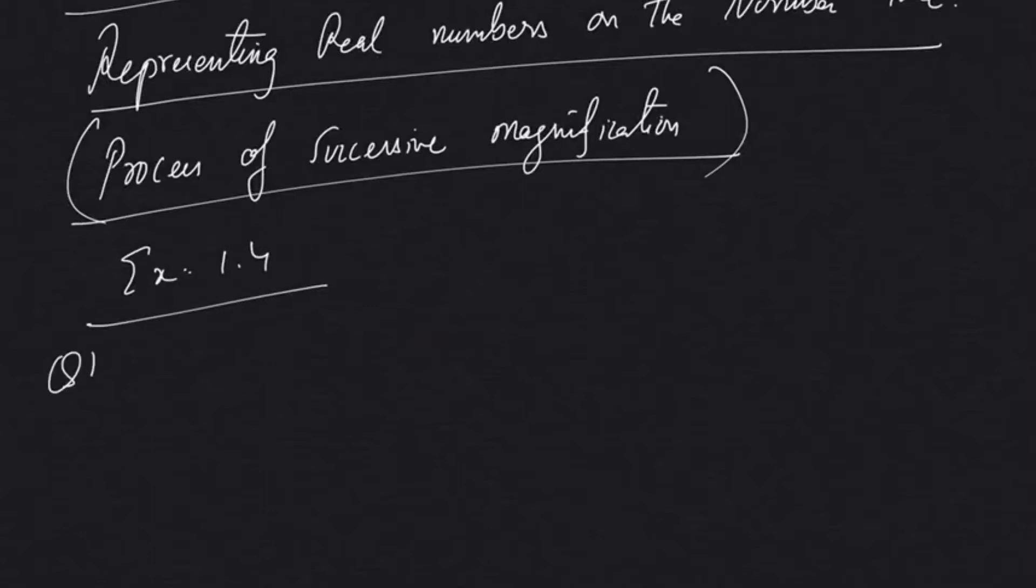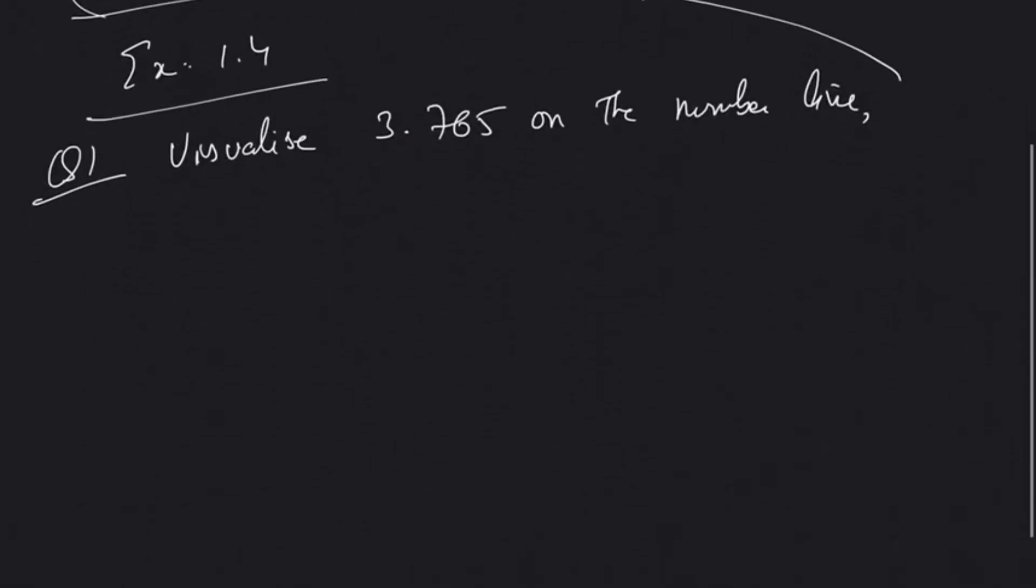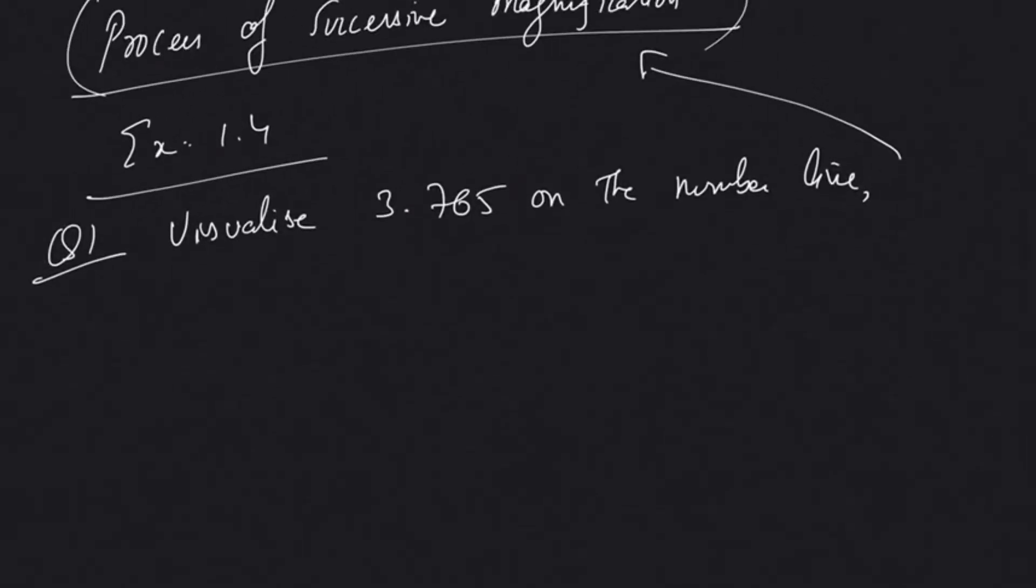Now the question I will be doing will be from Exercise 1.4, Question Number 1: visualize 3.765 on the number line by the process of successive magnification.